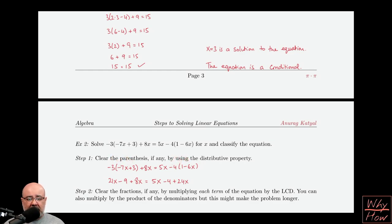Negative 3 times negative 7x gives us 21x. Negative 3 times positive 3 gives us negative 9. The 8x comes along, the 5x comes along, and then negative 4 times 1 is negative 4. Negative 4 times negative 6x would be positive 24x. At this stage, this is the equation that we have.